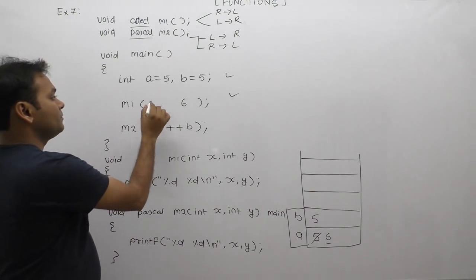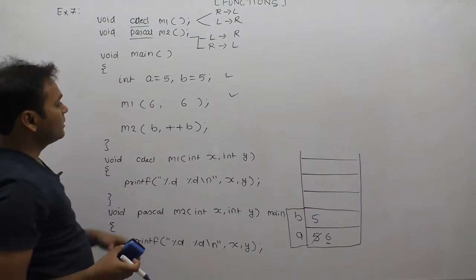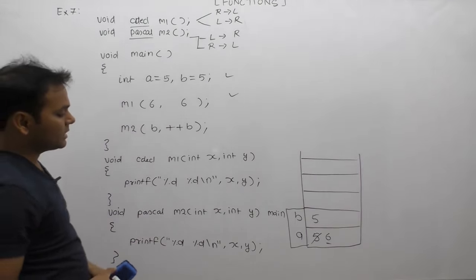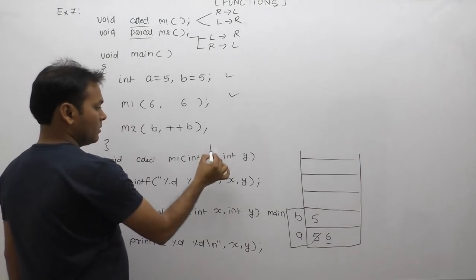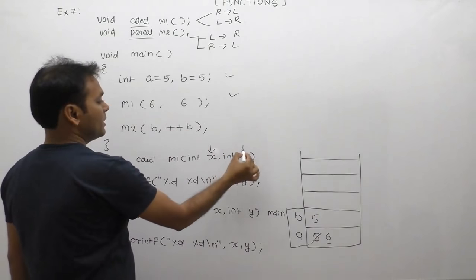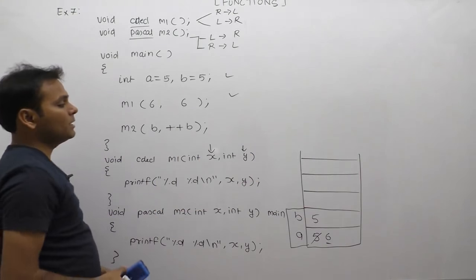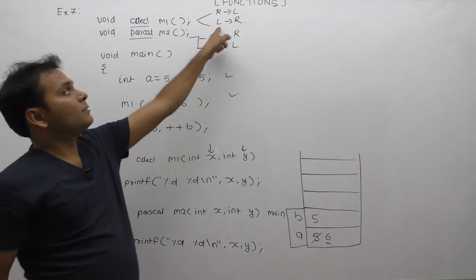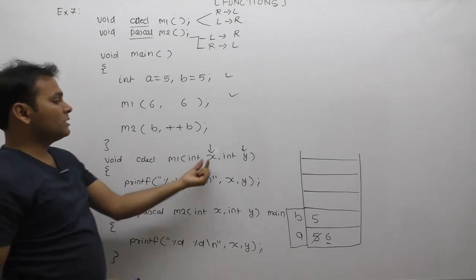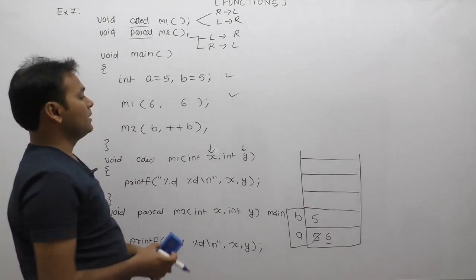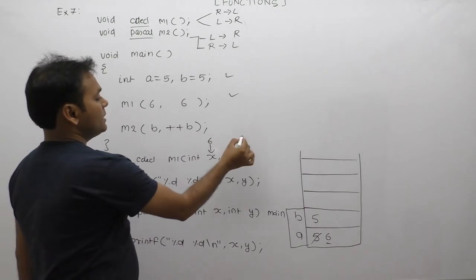Finally, function call supplies 6 and 6. First parameter x is assigned left to right according to the first parameter. The value is 6.